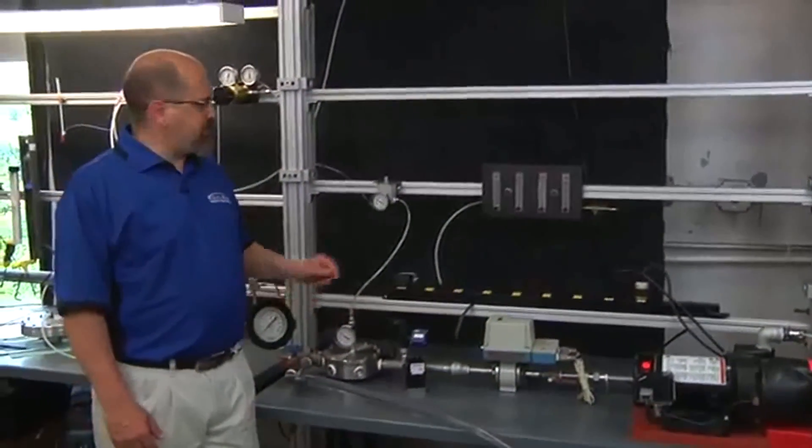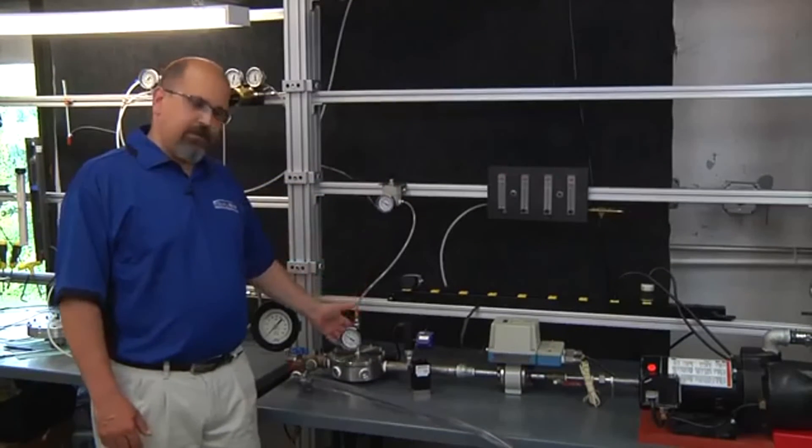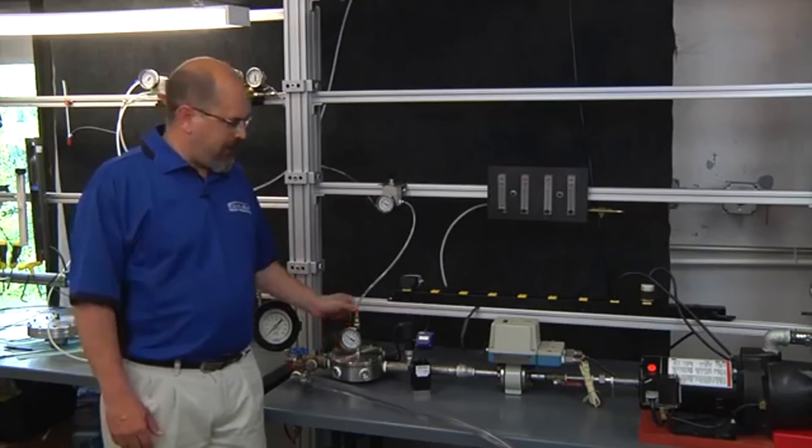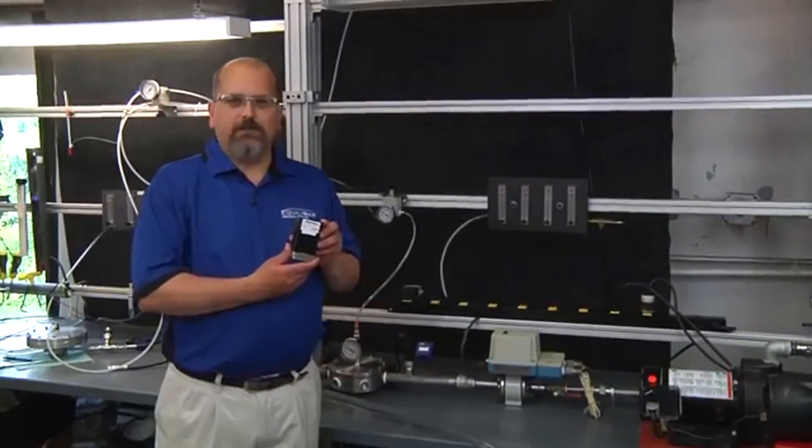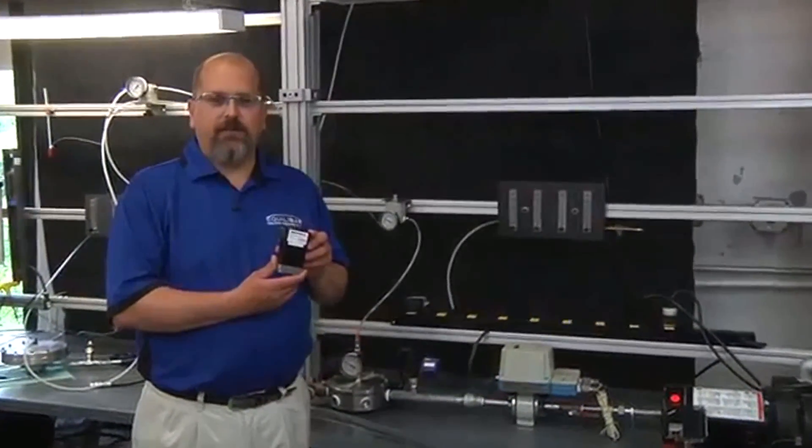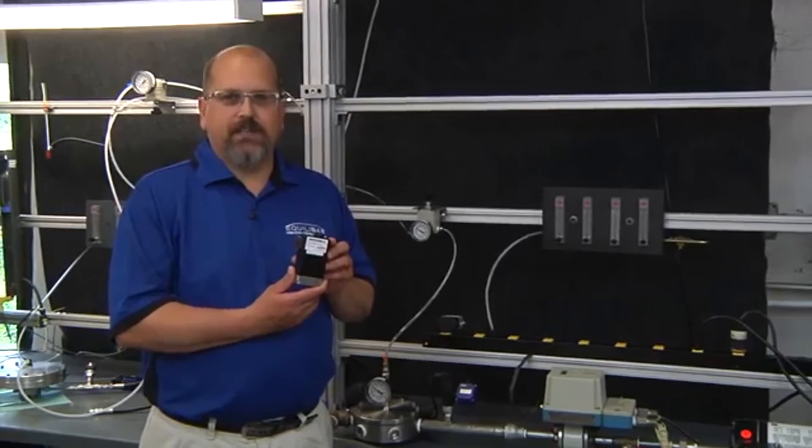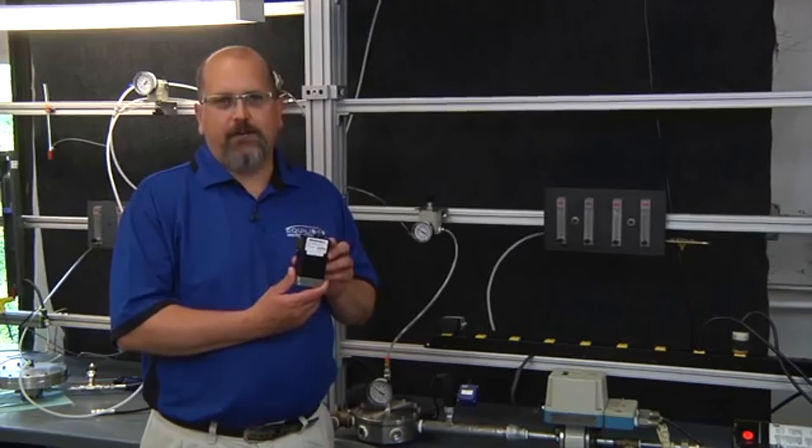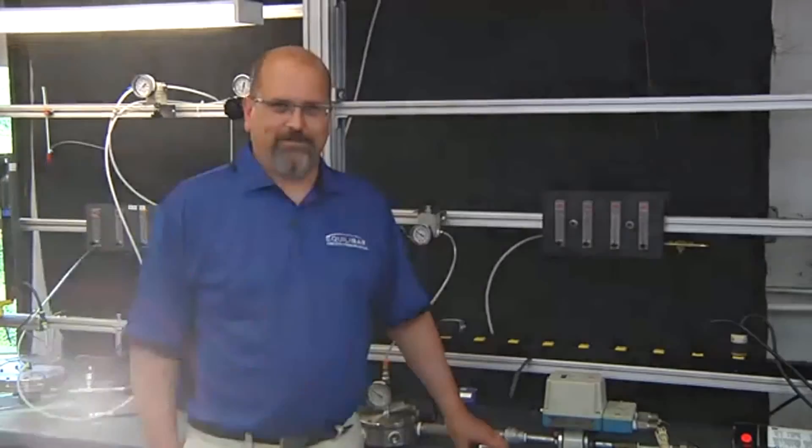For the purpose of today's test, I used a manually actuated regulator to provide the pilot pressure to the Equilibar. Often, people elect to use an electronic air pressure regulator to provide the pilot to the Equilibar Back Pressure Regulator. This can help in system automation and in remote control. If you'd like to learn more, please visit us at equilibar.com. Thank you.